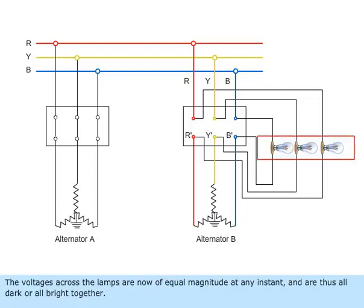The voltages across the lamps are now of equal magnitude at any instant and are thus all dark or all bright together.